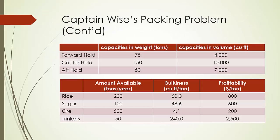Now let's look at the information of this problem. Captain Weiss's ship has three cargo holds — forward, center, and aft. The capacities in weight are 75, 150, and 50 tons respectively. Capacities in volume are 4,000, 10,000, and 7,000 cubic feet in each of the three cargo holds. Captain Weiss can choose to buy any combination of the four commodities: rice, sugar, iron ore, and trinkets. At this island, there are 200 tons of rice available, 100 tons of sugar, 500 tons of iron ore, and 50 tons of trinkets available.